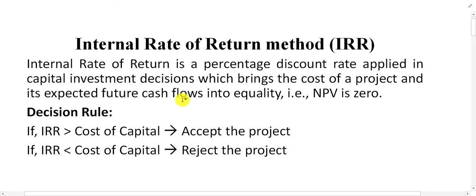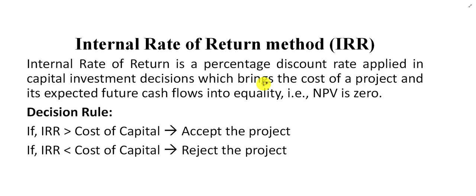The next method of capital budgeting is called the Internal Rate of Return method, also called IRR. A simple definition: the internal rate of return is a percentage discount rate applied in a capital investment decision which brings the cost of the project's expenditure and its expected future inflows into equality. Simply put, IRR shows the profitability of the project in percentage terms.